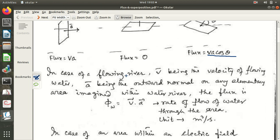And in case of a flowing river, we consider a flowing river here. V velocity of water, A being the outward normal on any elementary area imagined within the water river. The flux is phi W, W denotes water. Phi W is V dot A.